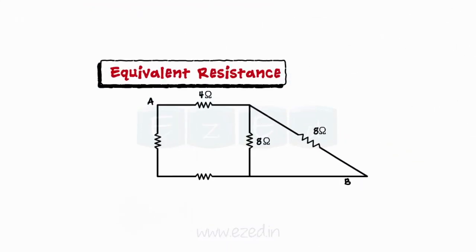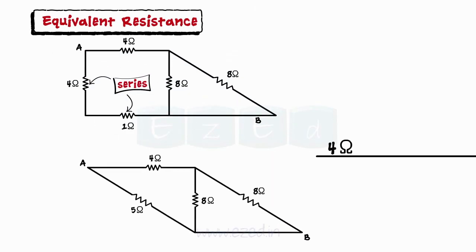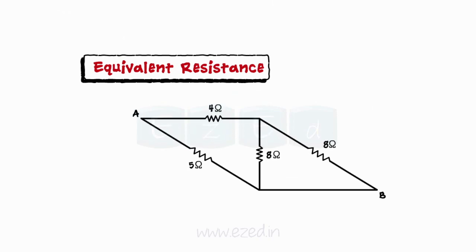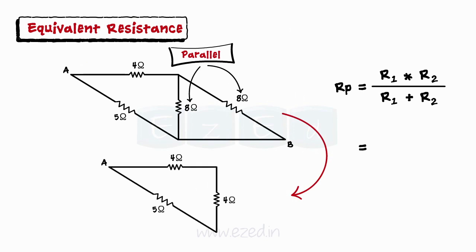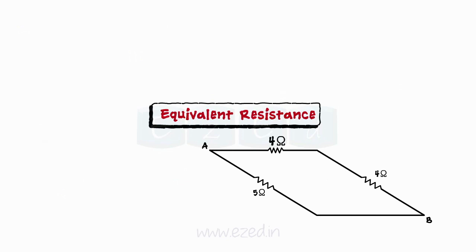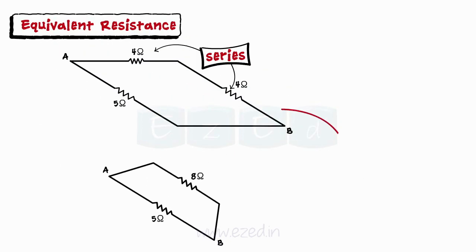Similarly, the two resistors of 4 ohms and 1 ohm near point A form a series structure, and are replaced by an equivalent series resistor of 5 ohms. Now the two 8-ohm resistors are connected in parallel, so we replace them by a single resistor of 4 ohms. Again, two 4-ohm resistors form a series structure, so we replace them by the equivalent series resistance of 8 ohms.